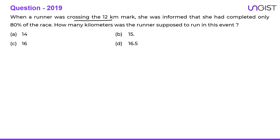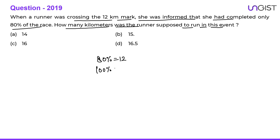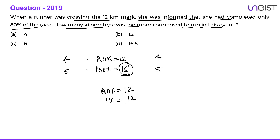Next question: When a runner was crossing the 12 kilometer mark, she was informed that she had completed only 80 percent of the race. So 80 percent equals 12 km. How many kilometers was the total race? 80 percent to 100 percent is a ratio of 4:5, so 12 × (5/4) = 15. Or by unitary method: 1 percent = 12/80, so 100 percent = 15 km. The total race length was 15 kilometers.